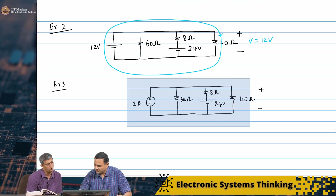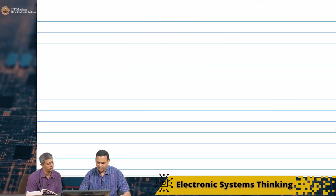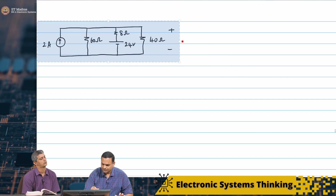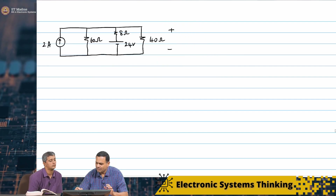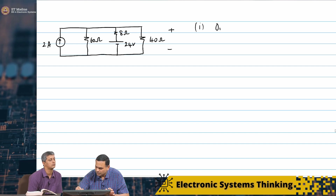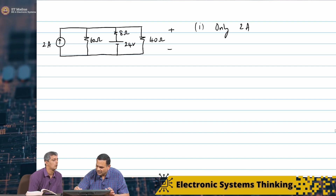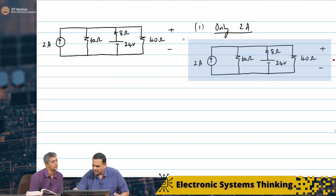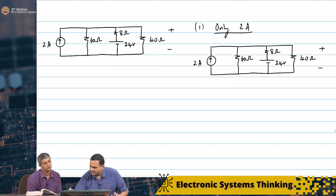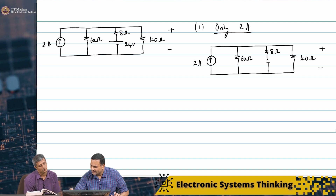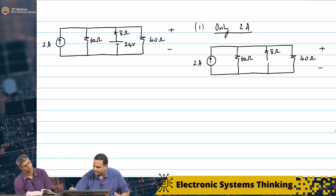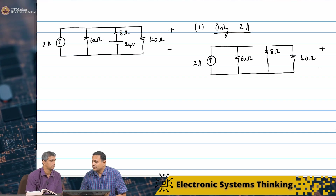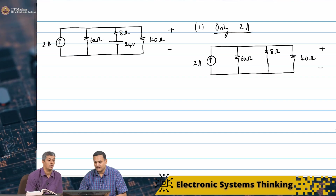My first step: I have only my 2 ampere source active. I will redraw the network such that the 24 volts is de-energized, which means it is a short circuit. And I want to find out the voltage across the 40 ohm resistor.